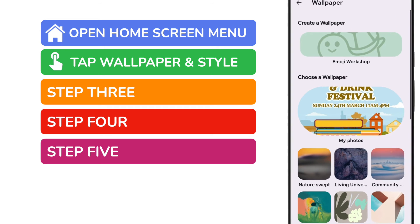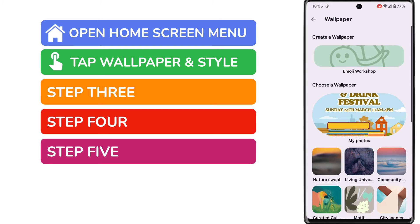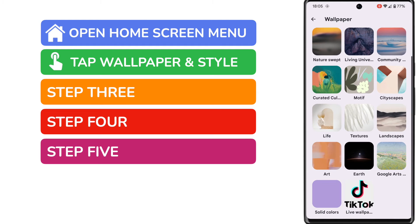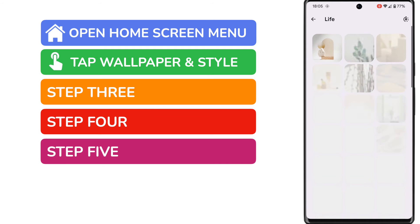Unsurprisingly, more wallpapers are shown across a range of topics. You can even add your own photos as wallpaper from this section. If you're interested in how to do that, check out the Woggle guide shown above. If I scroll down those wallpaper options, I'll tap on one to dive into it.